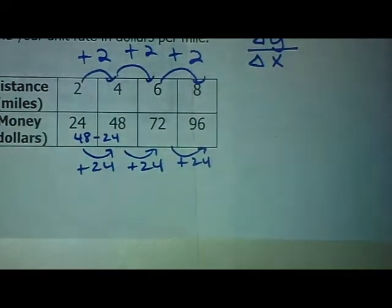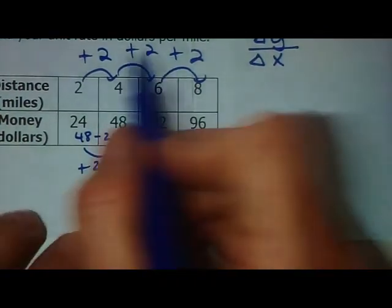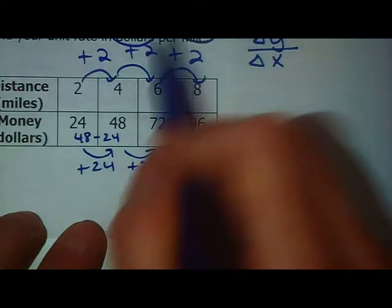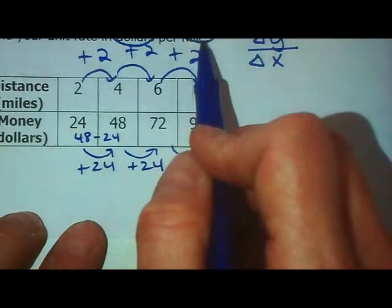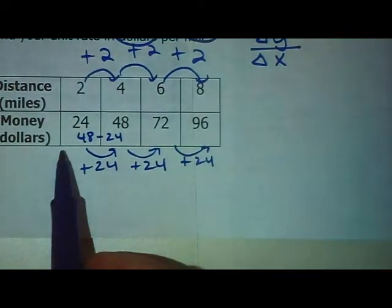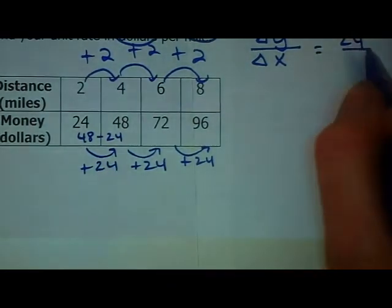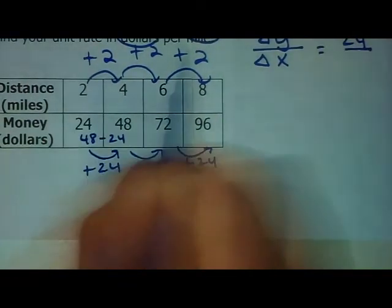We want to know our rate in dollars per mile. Dollars is first, miles is second. So dollars is down here—the change in the dollar on top, that's 24. The change in my miles is 2, that goes on the bottom.